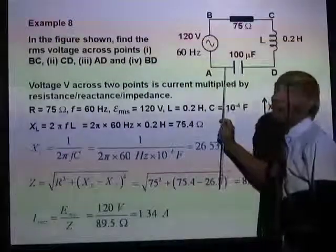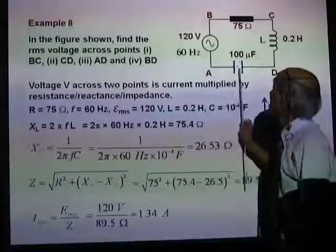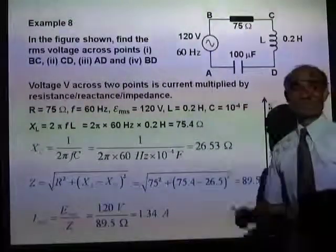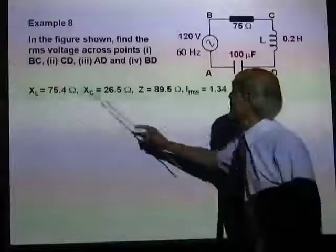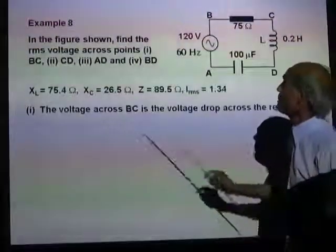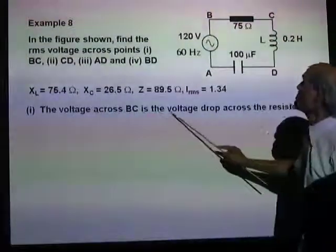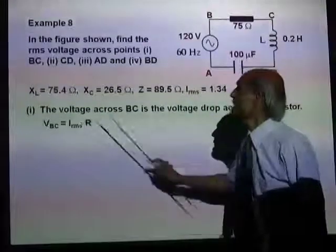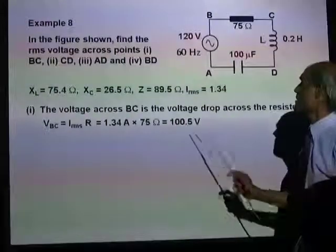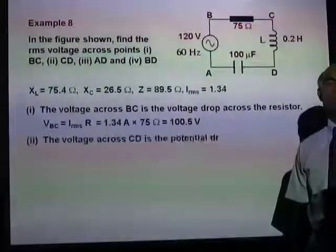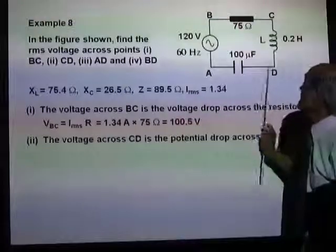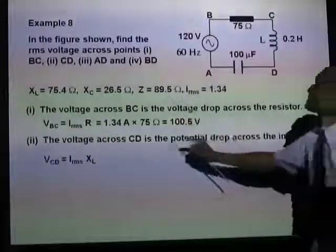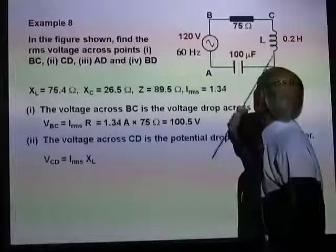The current in the circuit is IRMS. The voltage across BC is the voltage drop across the resistor: VBC equals IRMS times R, which is 100.5 volts. The voltage across CD is the potential drop across the inductor: VCD equals IRMS times the inductive reactance.